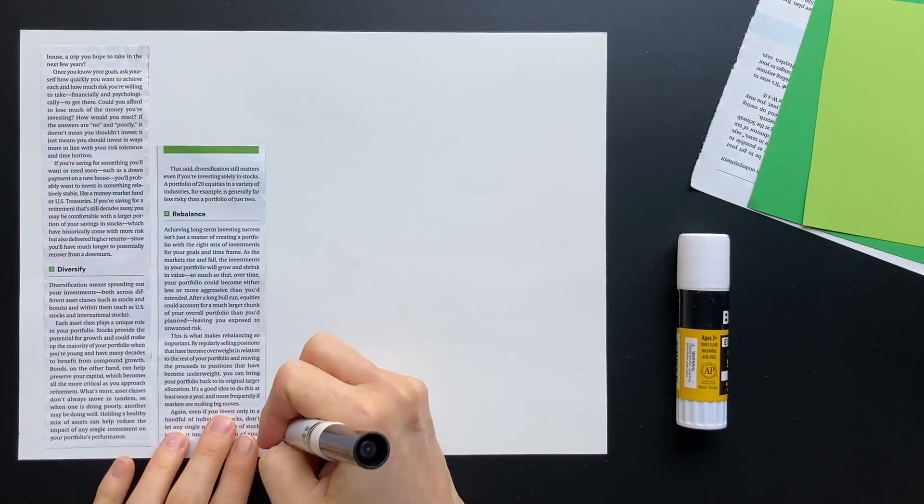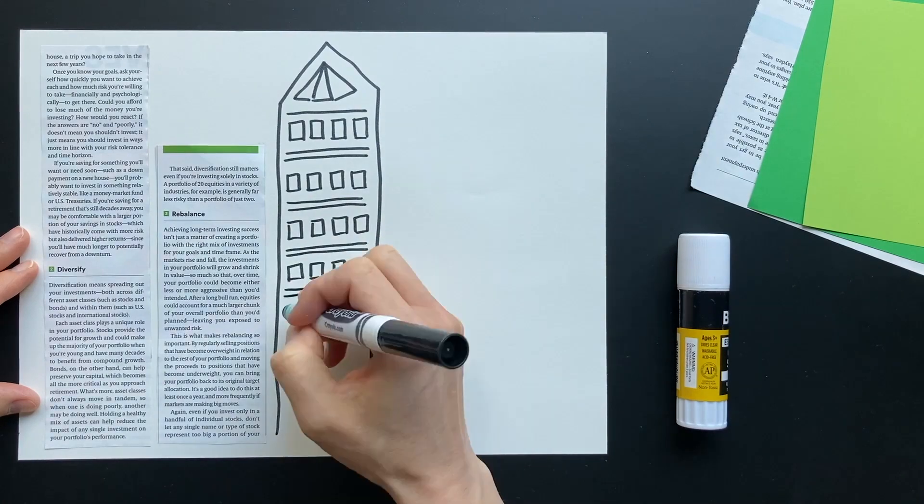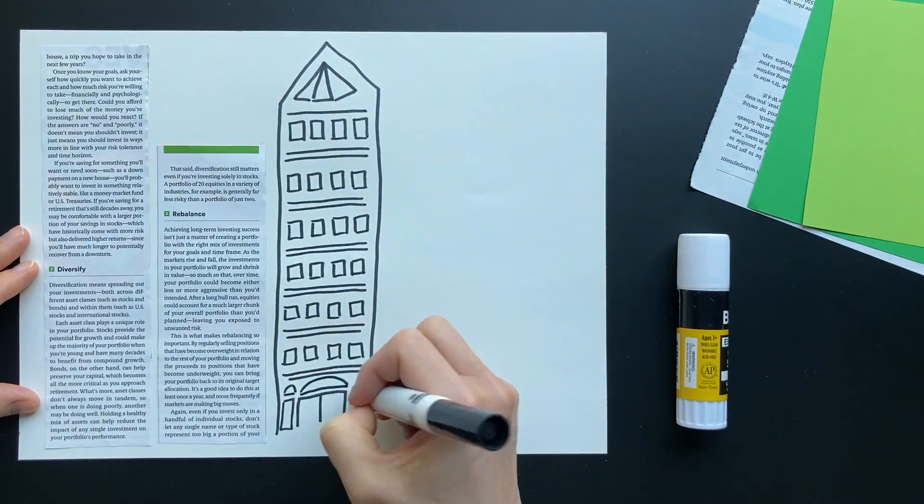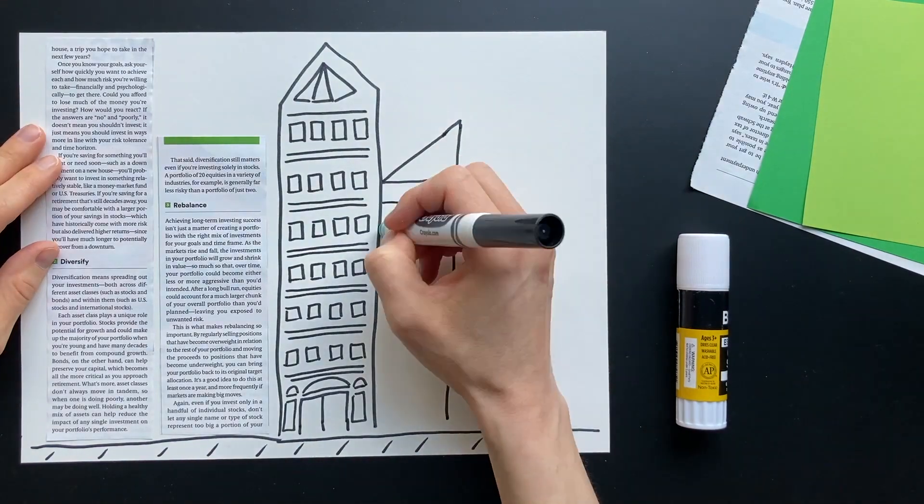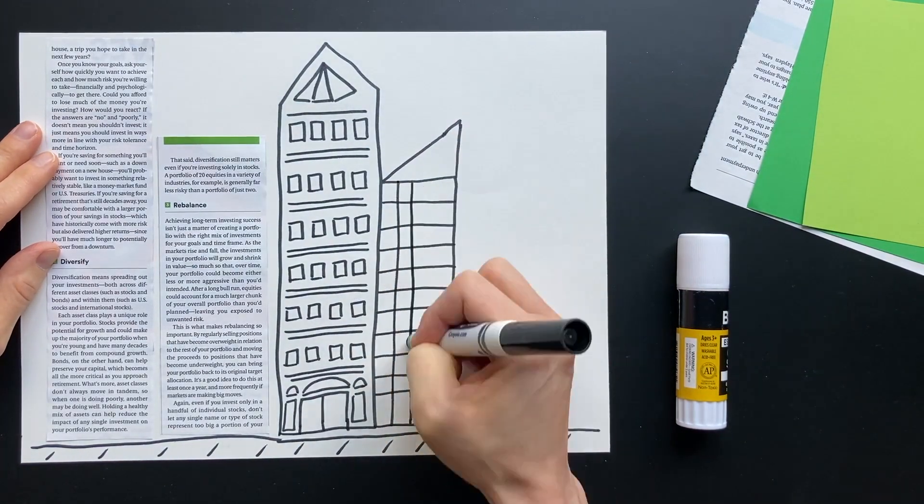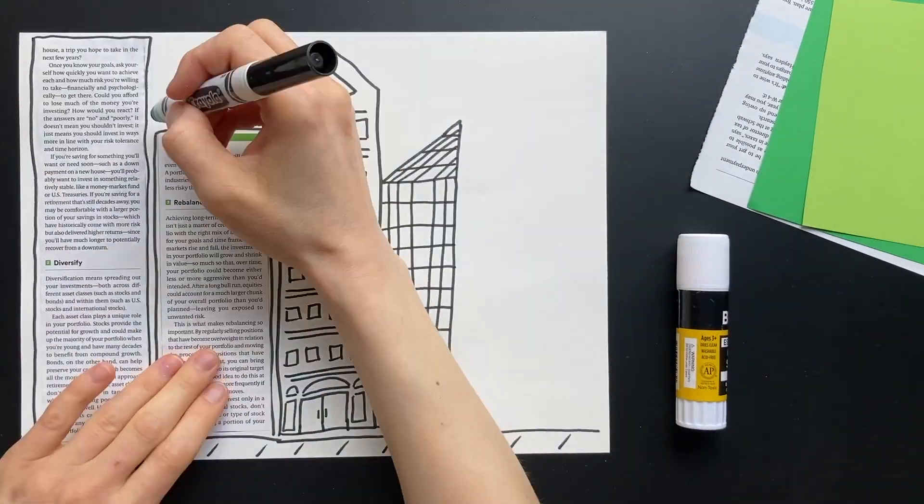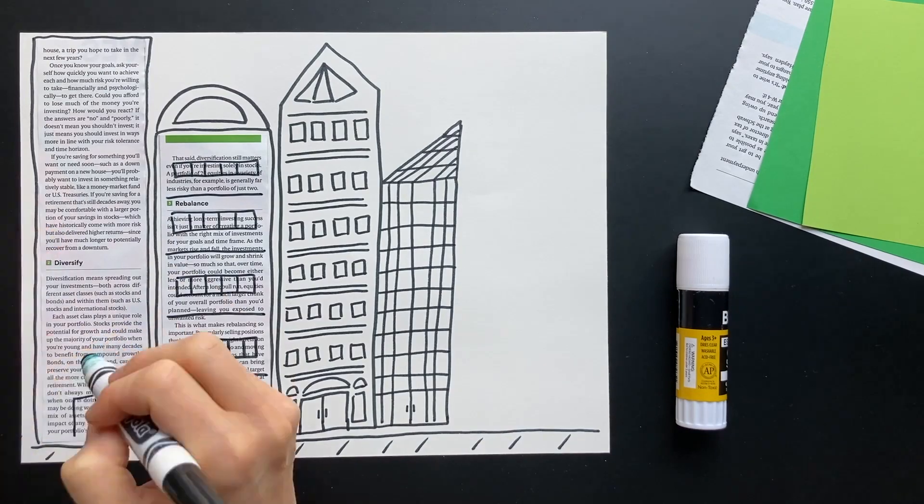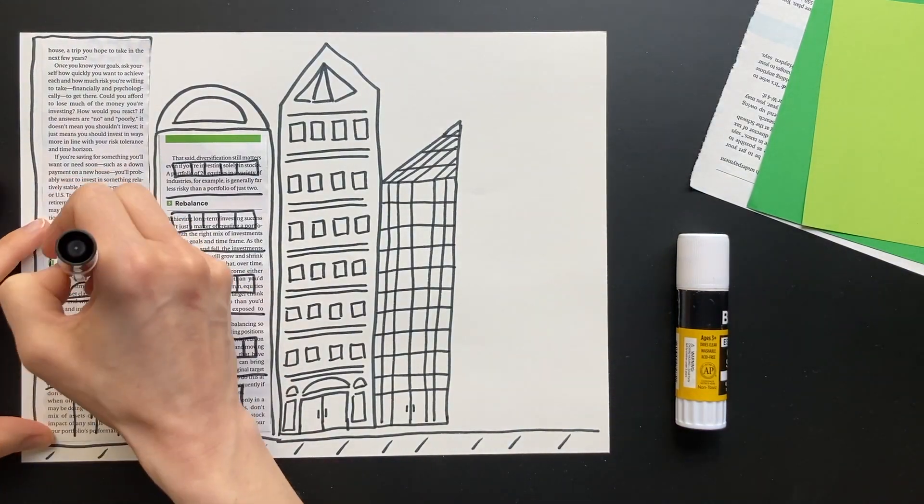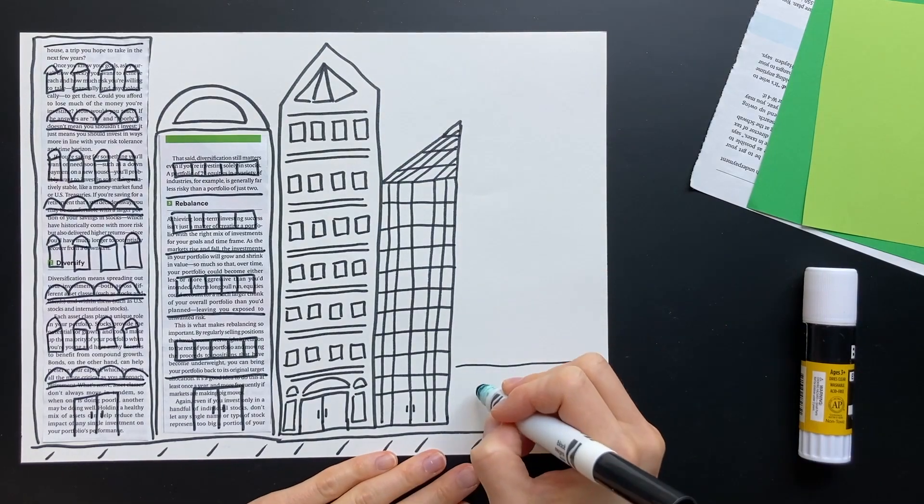Next take your marker and add anything more you'd like to your place. I'll add some more buildings. Then I'll add some details to my magazine page buildings. And here's a park.